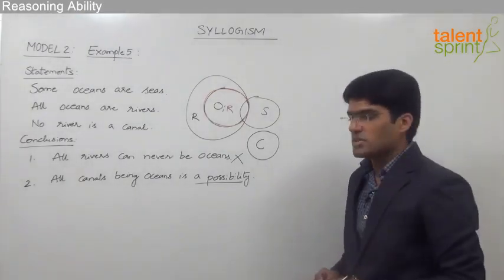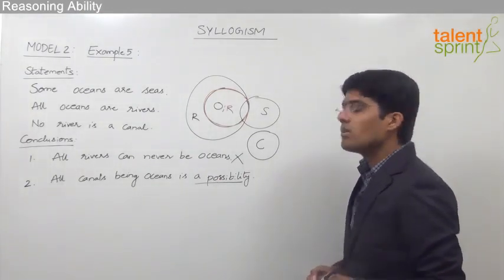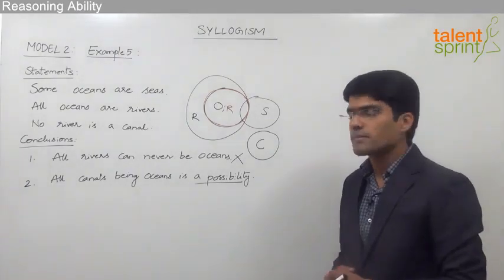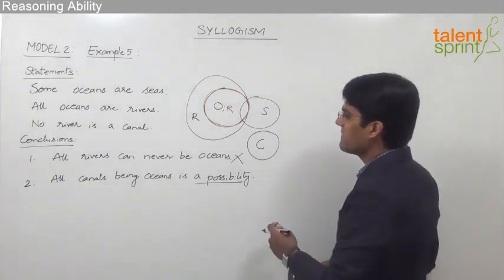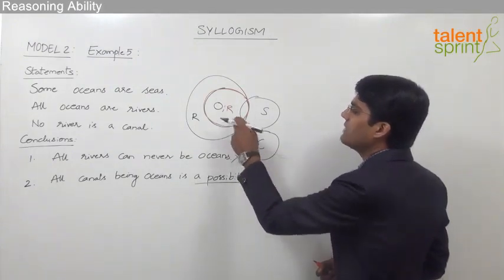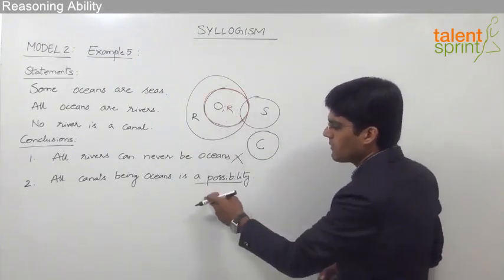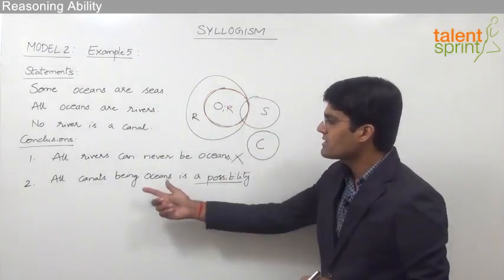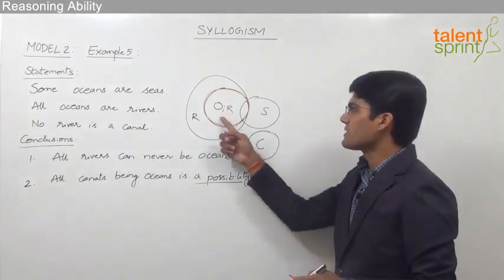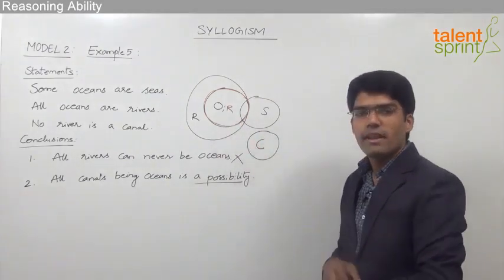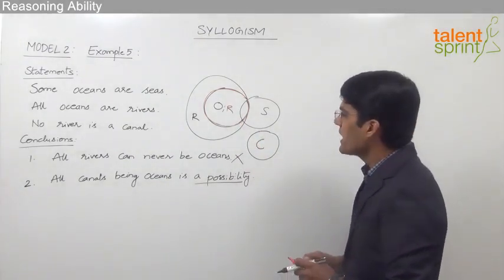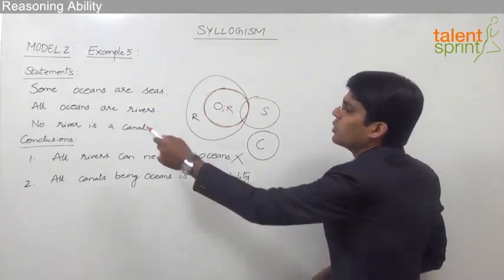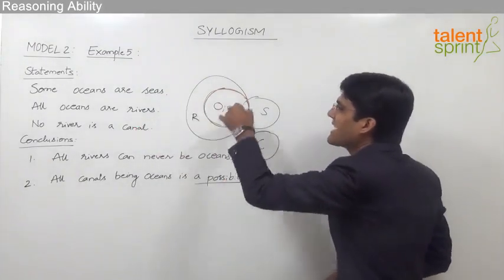Now let us look at the second conclusion: all canals being oceans is a possibility. We need to check whether all canals can be oceans. In the basic diagram, there is no overlapping between canals and oceans, so the given possibility is not satisfied. The conclusion says all canals must be oceans, but canals and oceans do not share a common part. If we try to draw canals in various cases, we find that no river is a canal, so canals can never come inside the rivers.